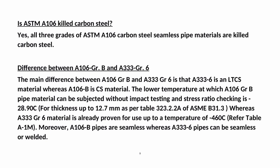The main difference between A-106 GR B and A-333 GR 6 is that A-333 GR 6 is an LTCS (low temperature carbon steel) material, whereas A-106 B is a CS (carbon steel) material. The lower temperature limit for A-106 GR B without impact testing is minus 28.9°C for thickness up to 12.7 mm, as per table 323.2.2A of ASME B31.3, whereas A-333 GR 6 is proven for use down to minus 46°C per table A-1M. Additionally, A-106 B pipes are seamless, whereas A-333 GR 6 pipes can be seamless or welded.